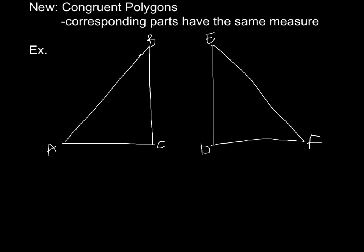What we know is that the corresponding parts have to have the same measure. So these two sides have to be congruent, these two sides have to be congruent, and these three lines mean those sides are congruent. Two lines mean these two are congruent, as are these two. And we know that this is a right angle.